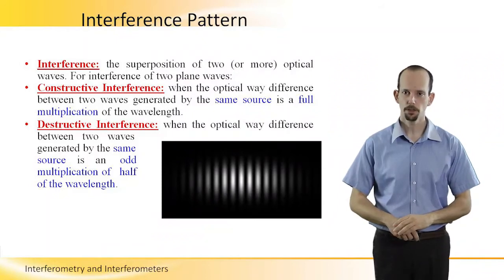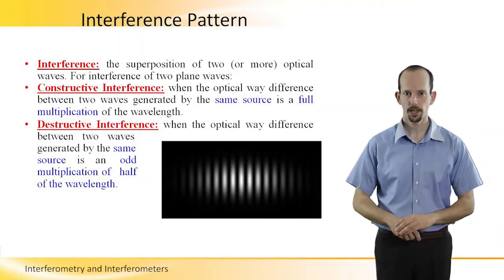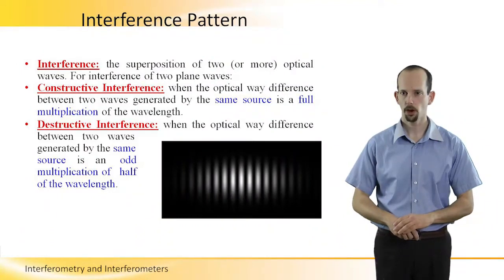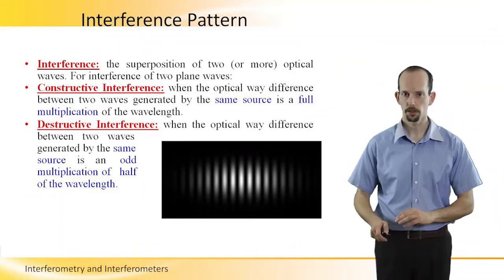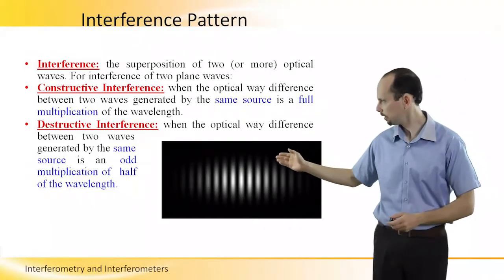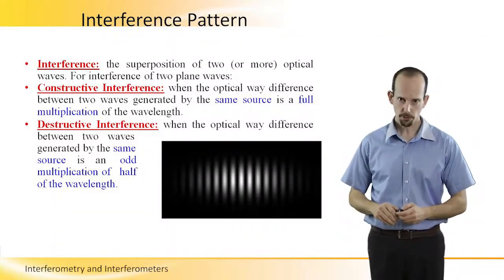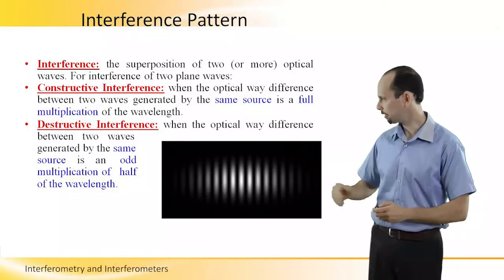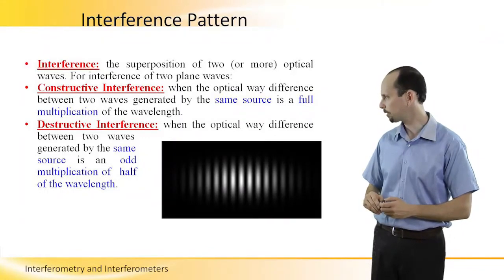Interference pattern. Interference is a superposition of two or more optical waves. For interference of two plane waves, we can get constructive interference when the optical wave difference between the two waves is a full multiplication of the wavelengths. You can see here constructive interference in the white lines. Destructive interference will be created in the black lines when the optical wave difference between the two waves is an odd multiplication of half of the wavelengths.